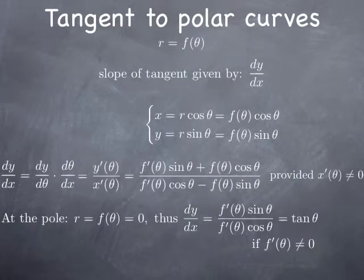When we are at the pole in particular, r is zero, in other words f of theta is zero. So in the expression we have, the second terms in the top and in the bottom are both zero because f of theta is zero. We end up with our ratio being just f prime of theta sine of theta divided by f prime of theta cosine of theta. Assuming that f prime is not zero, this is really just tangent of theta. That means that at the pole for a particular value of the parameter theta, the tangent is going to have slope tangent of that angle theta — the tangent line is the line that points in the direction theta and goes through the origin.